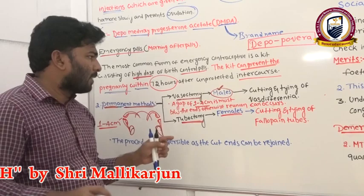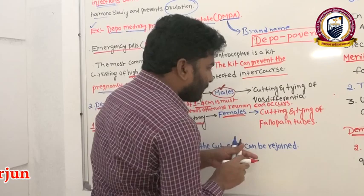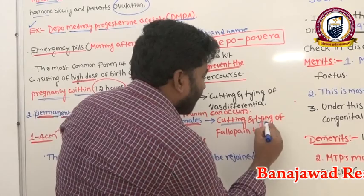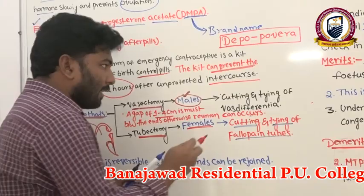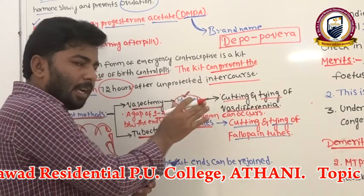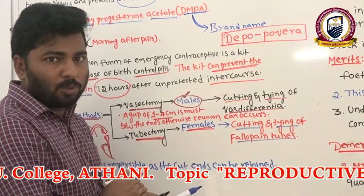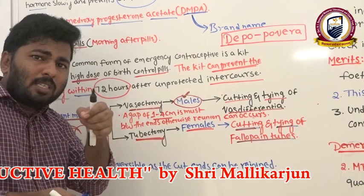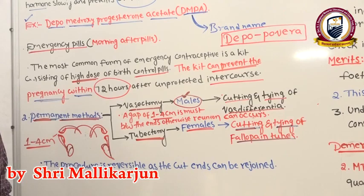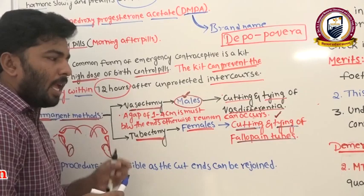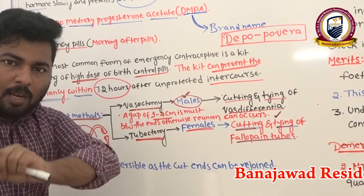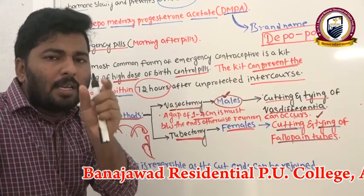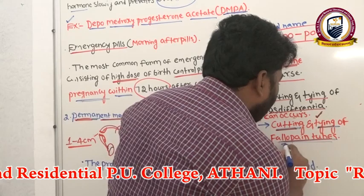In tubectomy, instead of cutting the vas deferens, we cut and tie off the fallopian tubes — specifically near the ampulla-isthmus junction. This prevents eggs from traveling from the ovary through the fallopian tube to the ampulla and isthmus region, thereby preventing fertilization.